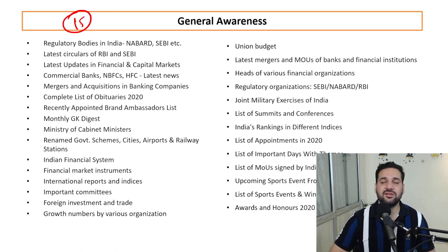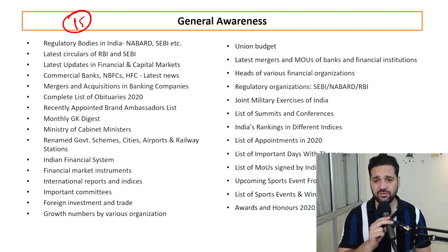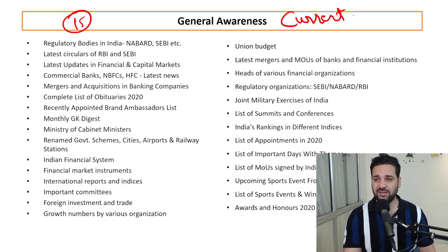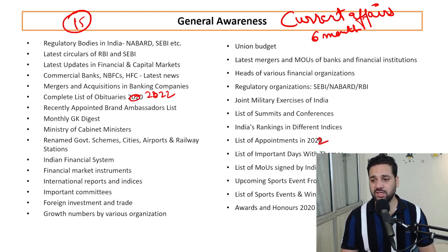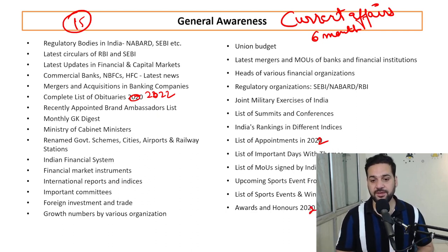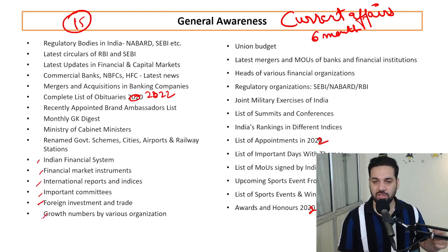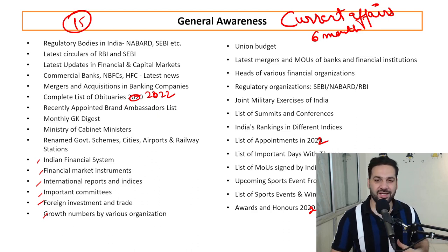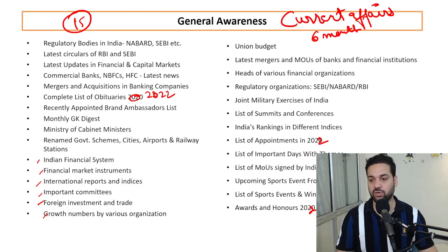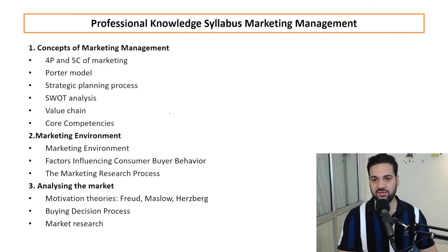For General Awareness, 15 questions will appear. The syllabus is very wide. I recommend covering the last six months of current affairs along with some static GK. Topics include: RBI circulars, regulatory bodies, obituaries, appointments, MoUs signed, awards and honors, sports events, government schemes, important committees and reports, foreign investment and trade news, financial industry news, growth numbers by various organizations, Union Budget, mergers and acquisitions, joint military exercises, summits, and India's rank in various reports.